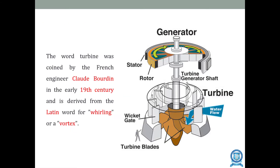Looking at the diagram, you can see the turbine blades and the wicket gate. The turbine generator shaft is connected to the generator, comprising both stator and rotor. The word 'turbine' was coined by the French engineer Claude Burdin, and it was derived from the Latin word for 'whirling' or 'vortex,' as the liquid is being whirled outward.